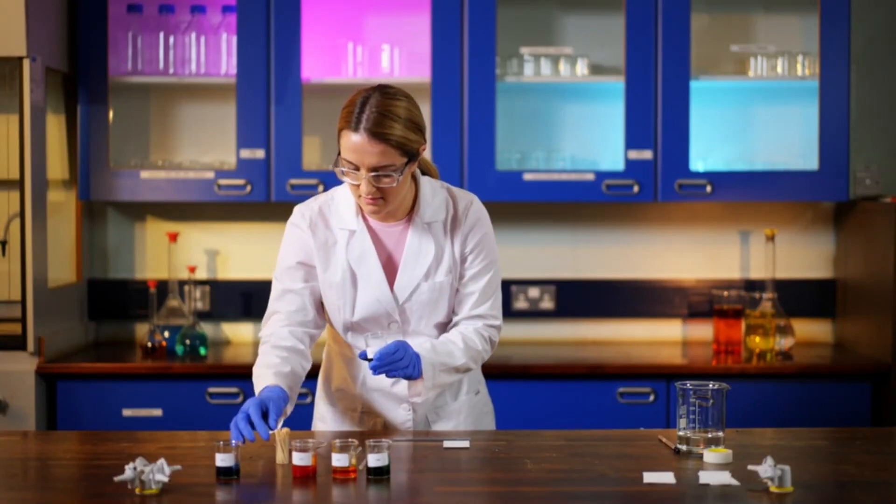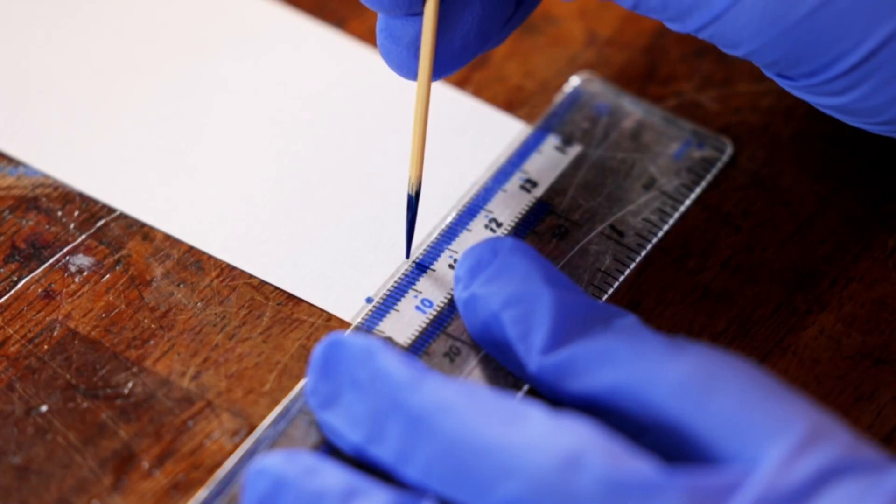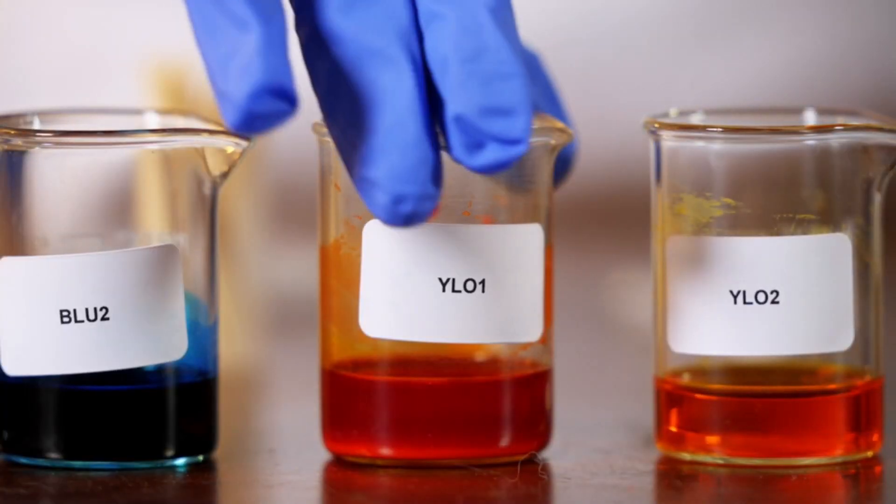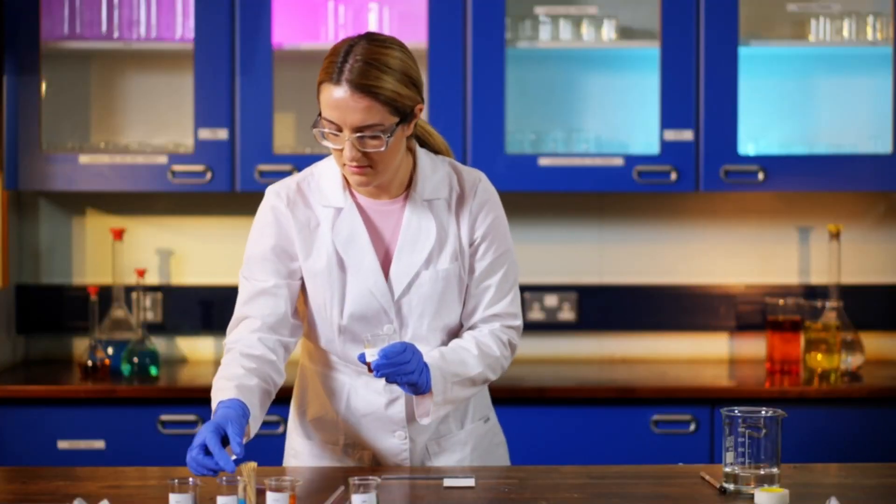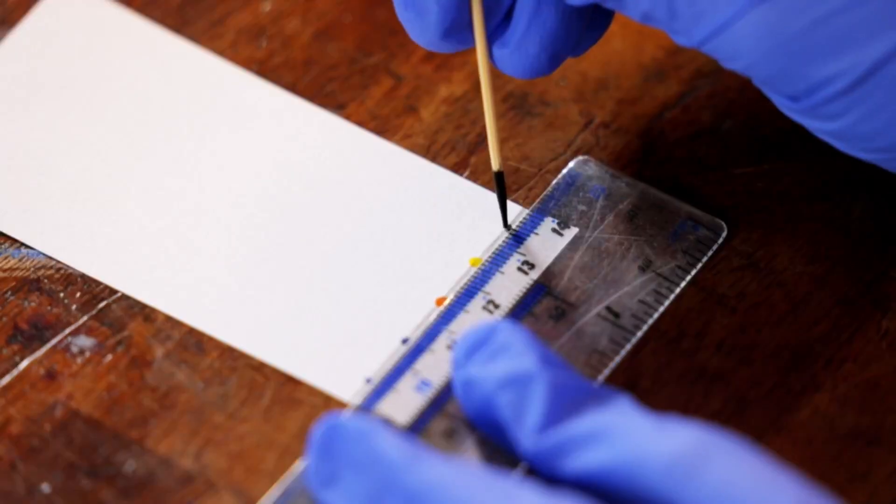Now dip a second toothpick into the next food coloring. For us it's blue two. Leave about a one centimeter gap between each dot. We repeat this with yellow one, yellow two, and then finally with our green food coloring.